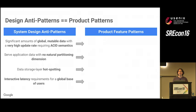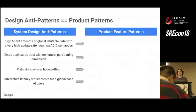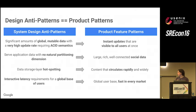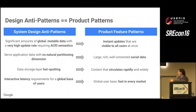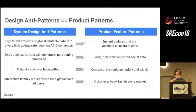I'd also like to avoid having to provide interactive latency to a global user base. What I realized was that these distributed system design anti-patterns are exactly the patterns for the products themselves. For mutable data, you want instant updates that everybody sees all at once. A well-connected social system has at its core a set of data that's really hard to partition. You want your data to flow and circulate rapidly and widely — this is viral data. And you want to be fast for every user in the world all at once. So the design anti-patterns of a system become the desirable product features.